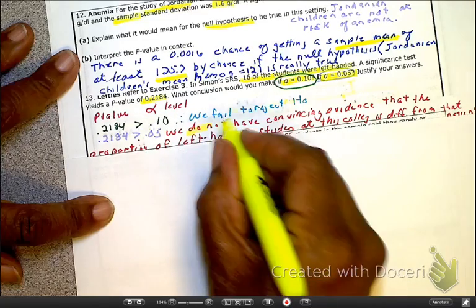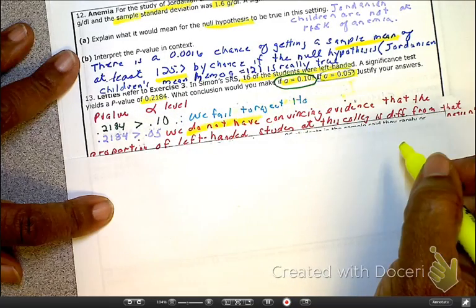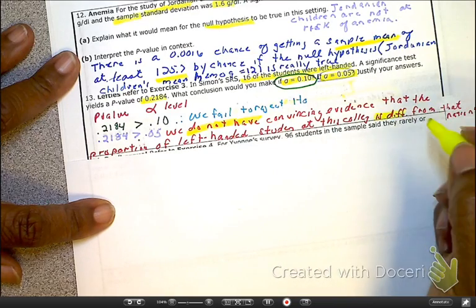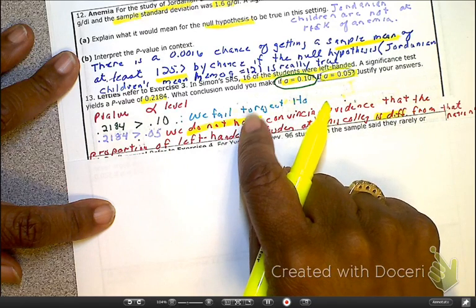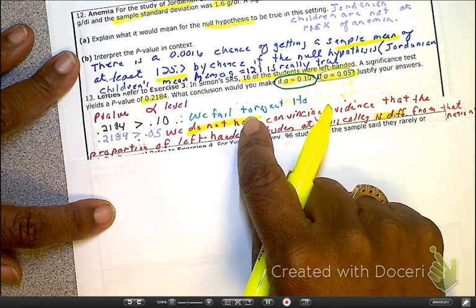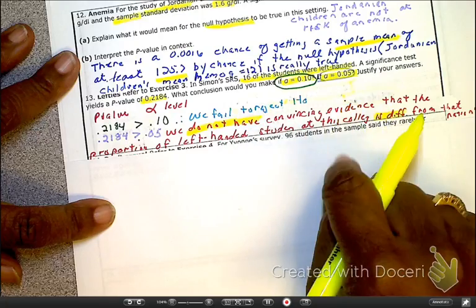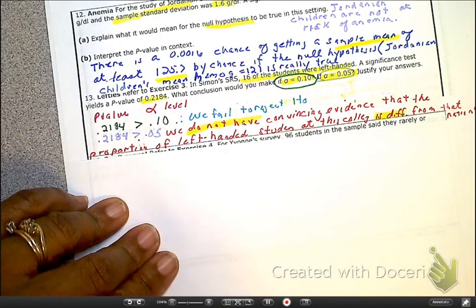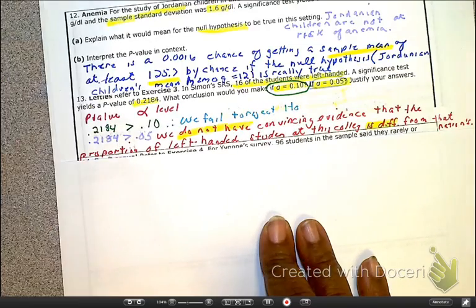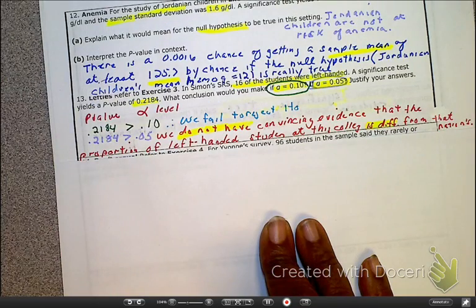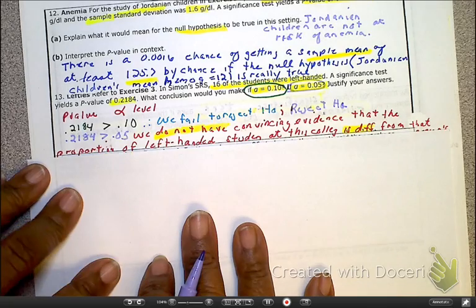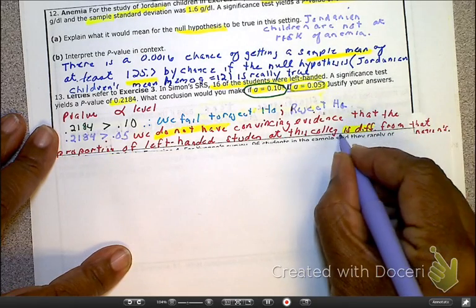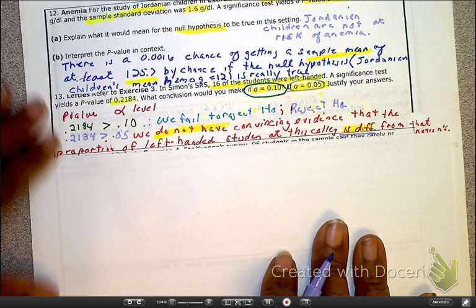We do not have evidence that the proportion is different. Because remember, we're going to fail to reject, or I'll use another phrase, support the HO, which means that we're going to reject the HA. And what is the HA? The HA was that it is different. So we're rejecting the HA, and the HA, like I said, is different. TTFN, ta-ta for now.